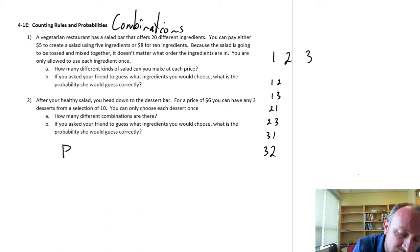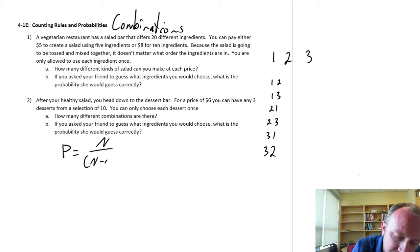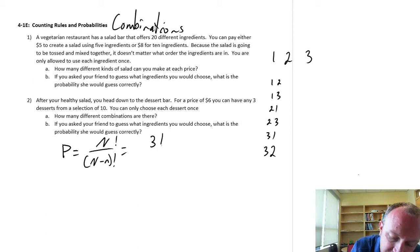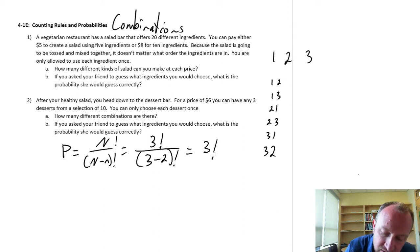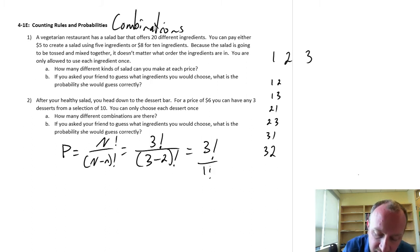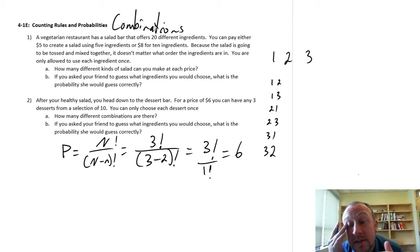The formula — again n factorial over (n minus little n) factorial — is 3 factorial divided by (3 minus 2) factorial, which is 3 factorial because the denominator is just 1 factorial, which is also just 1. And so here now I have a value of 6.